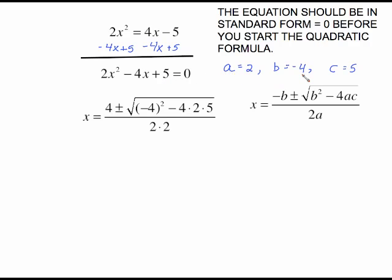a is 2, b is negative 4, c is 5. Here's your formula and I've already plugged things in. I've put negative of negative 4. That's how this is turned into positive 4. I have my b which is negative 4 quantity squared minus 4 times a which is 2 times c which is 5 all over 2 times a.